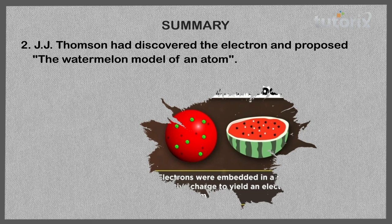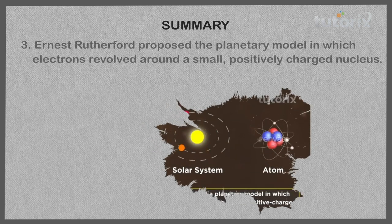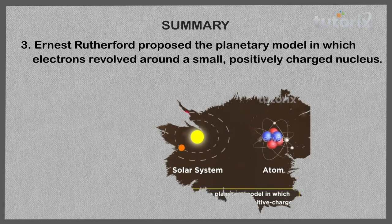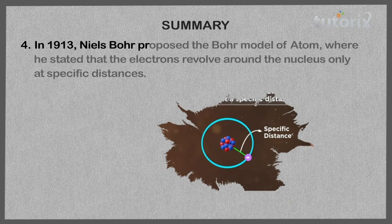Later came Ernest Rutherford, who proposed the planetary model in which the electron revolved around a small positively charged nucleus. Niels Bohr then proposed the Bohr model of the atom, where he stated that electrons revolved around the nucleus only at specific distances. This is how the structure of an atom evolved through the years.